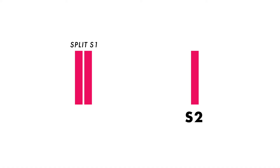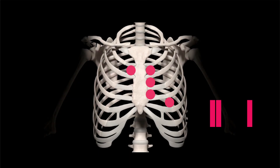The other potentially normal variation of S1 is splitting of the S1 sound. It's the result of the closure of the tricuspid valve slightly after the mitral valve, and although it might be very faint, it can be best heard along the left lower sternal border.